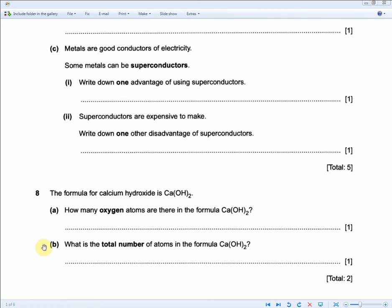The next question asks, what is the total number of atoms in the formula Ca(OH)2? If there's one Ca, two O, and two H, the answer is five number of atoms in total.